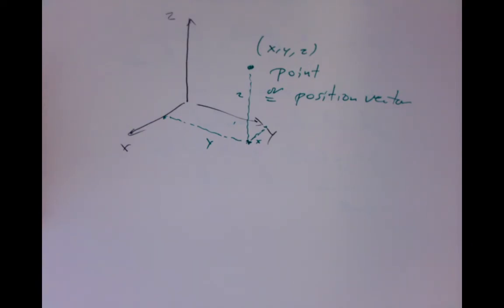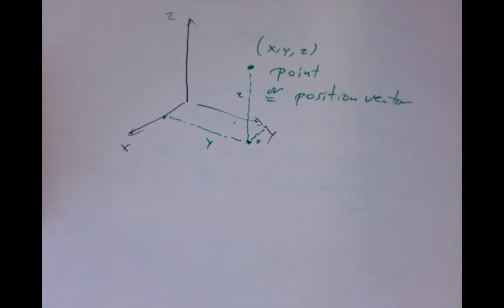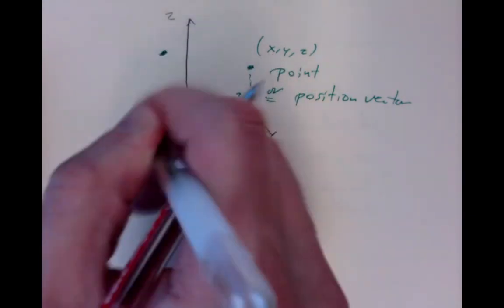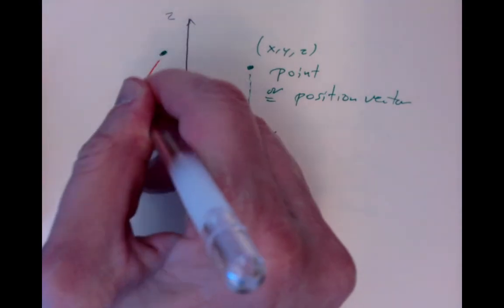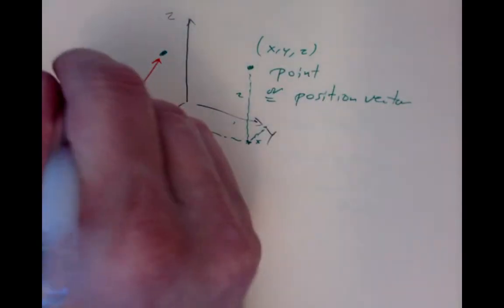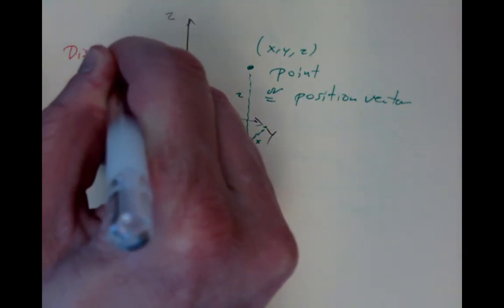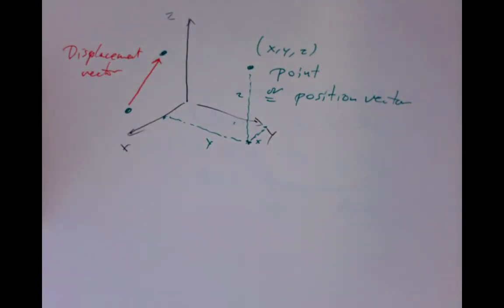We'll also have what are called displacement vectors, which we'll think of as sometimes the same sort of idea. But a displacement vector can be thought of as the difference between two position vectors. So if we have a position here and a position here, we'll draw a vector that goes from one to the other, and we'll call it a displacement vector because it indicates how one point is displaced with respect to another.